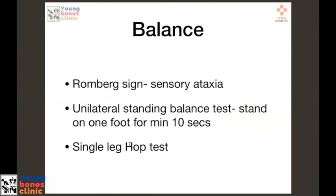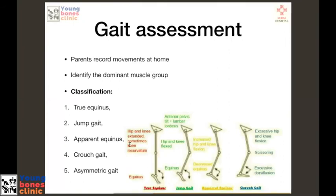Balance is examined to assess the extent of ataxia. Spastic kids with cerebellar damage may have difficulty balancing. We can ask the child to stand on one foot, hop on one leg, or do a Romberg sign — closing the eyes and standing — but they may fall due to poor proprioception and hence poor balance. Gait assessment is a very important part of cerebral palsy evaluation and we should all know it in detail.